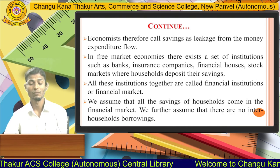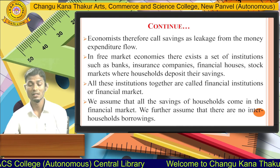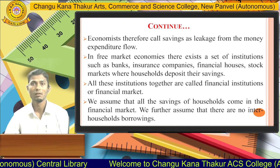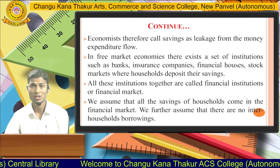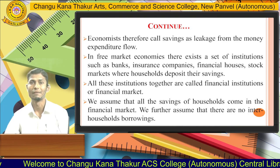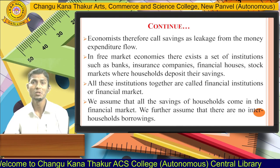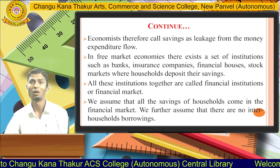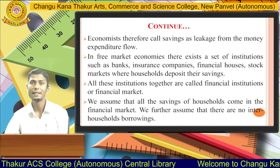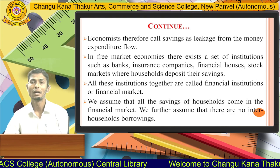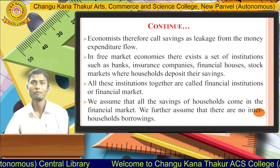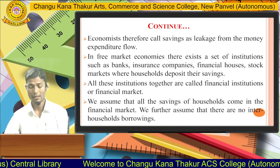In a free market economy, there exists a set of institutions such as banks, insurance companies, financial houses, and stock markets where households deposit their savings. All these institutions together are called financial institutions or financial markets. We assume that all the savings of households flow into the financial market.